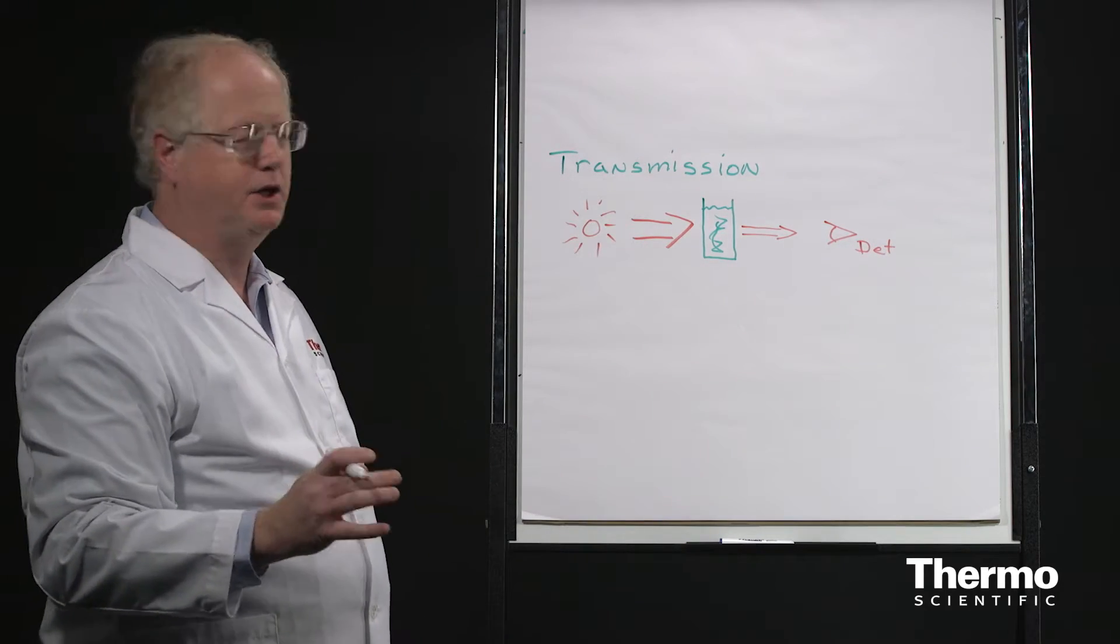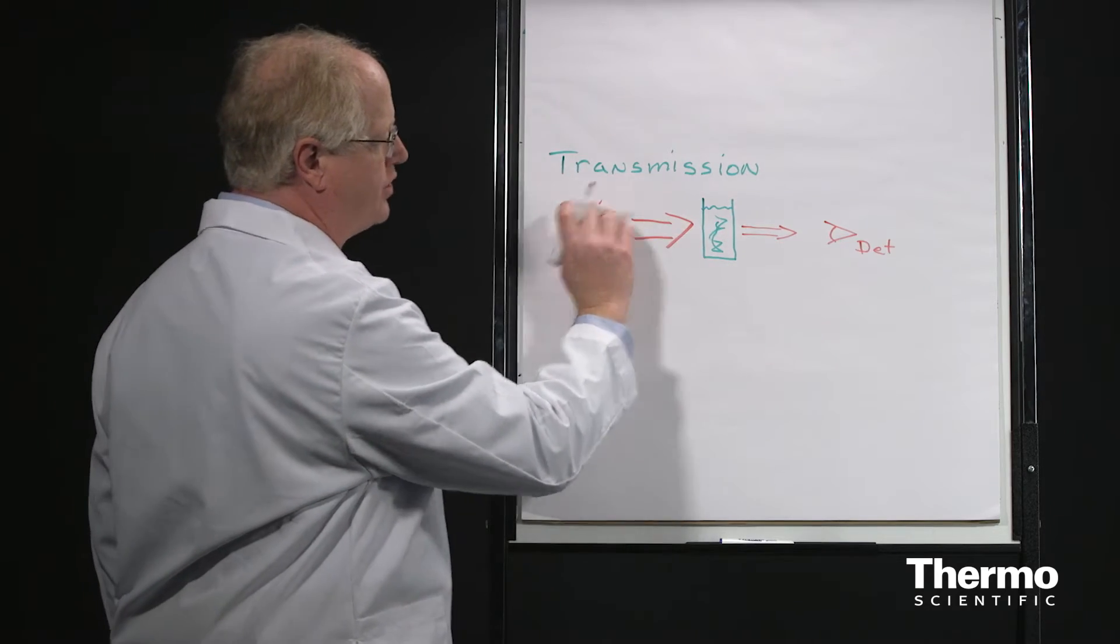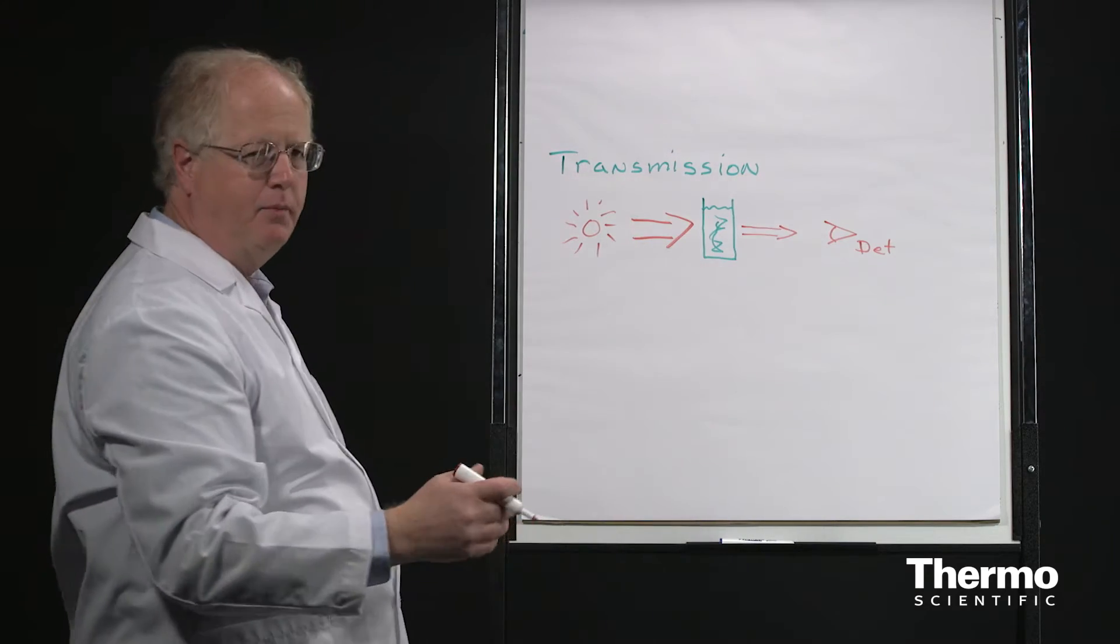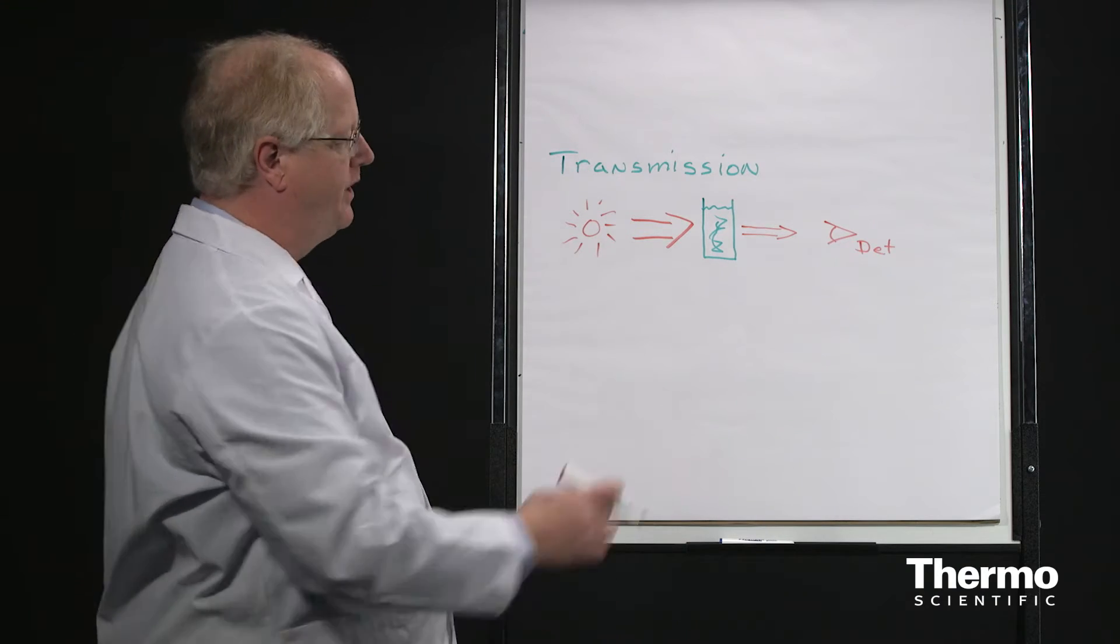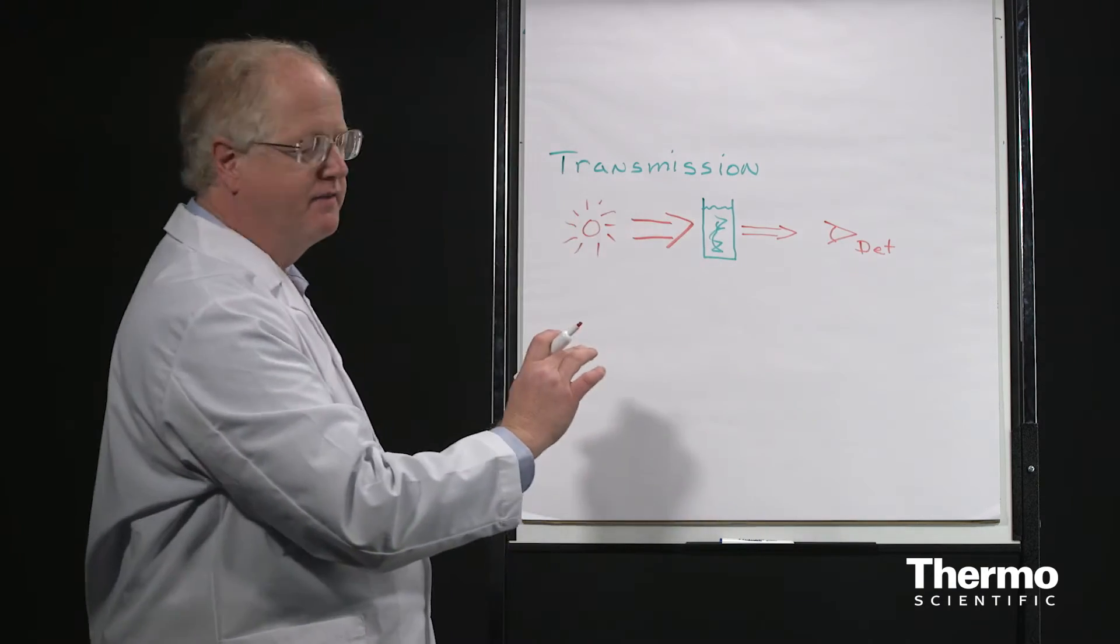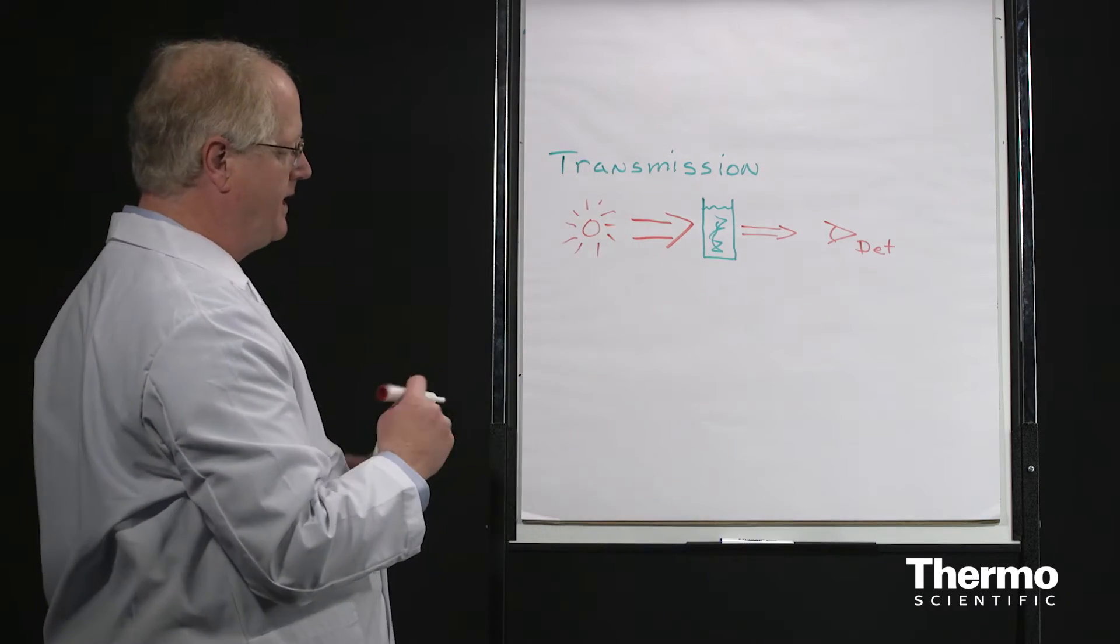That's all there really is to it. You have a sample in the beam between the source and the detector. The sample absorbs that light. We see that change. We take a spectrum without the sample present to give us a background, put the sample in, and look at the difference. That tells us how much light is absorbed.